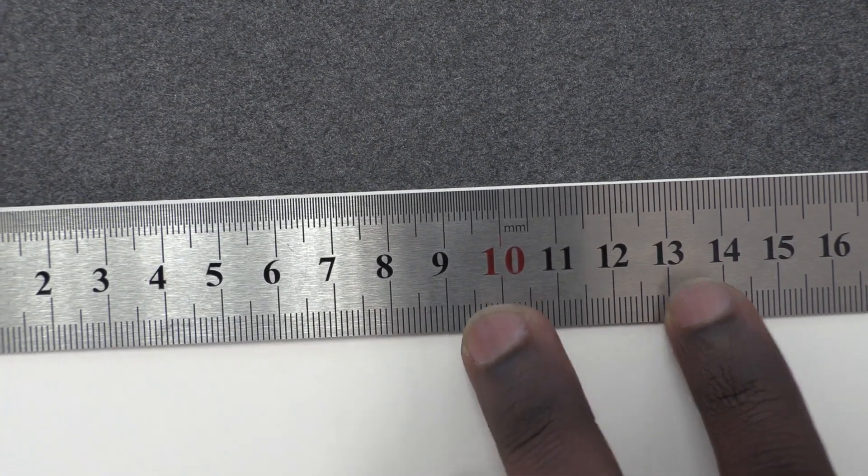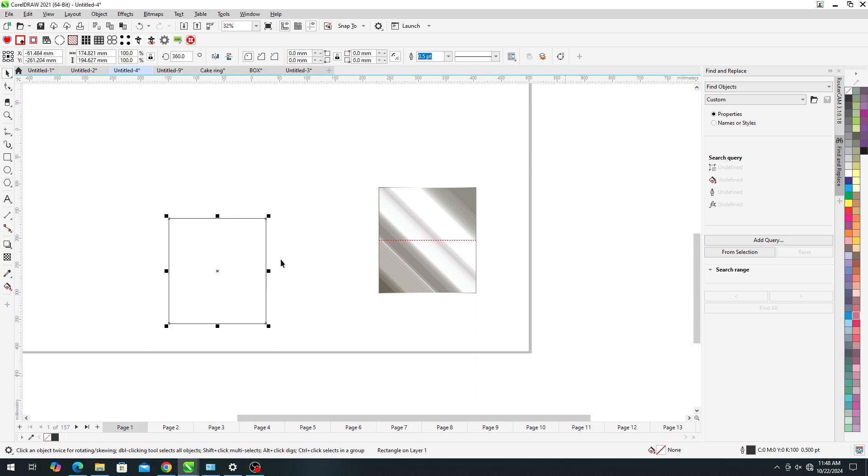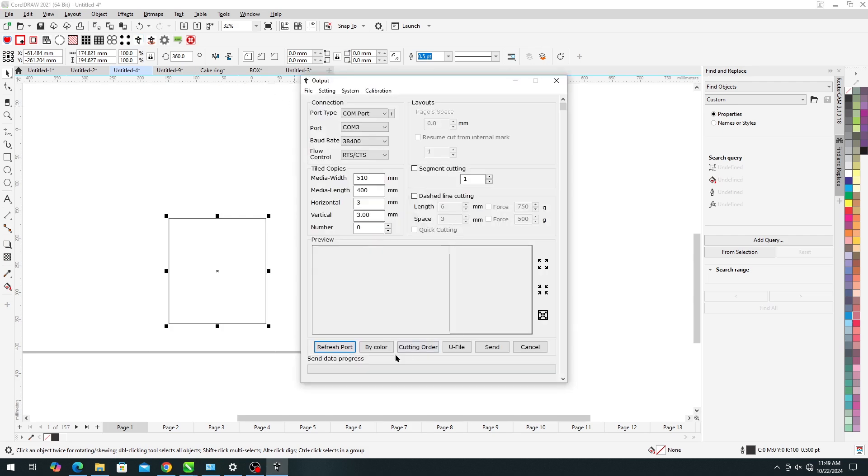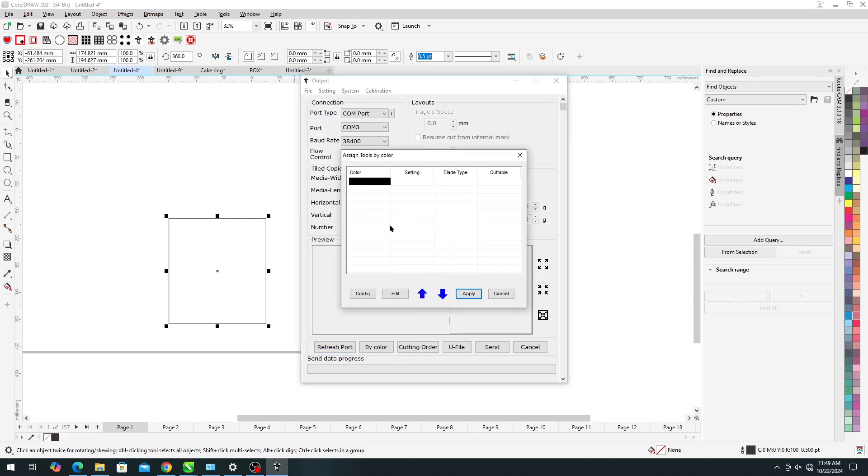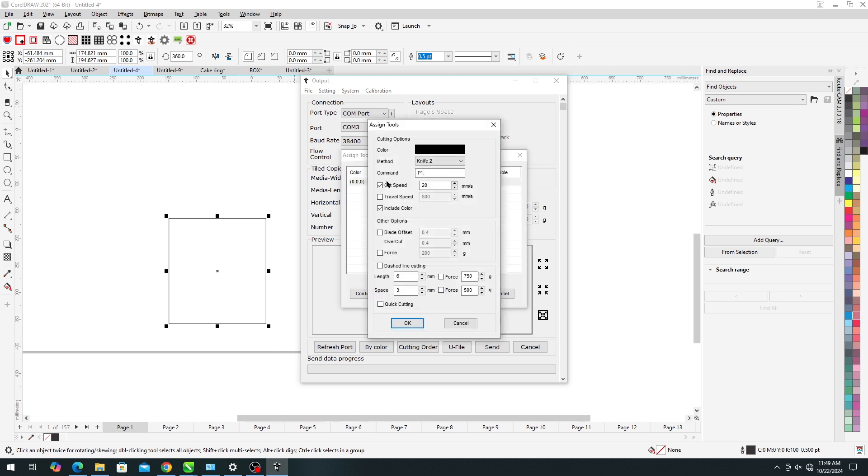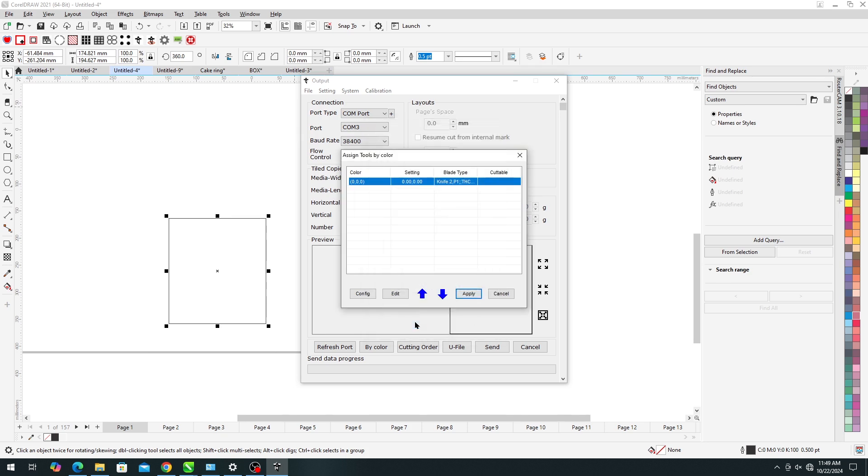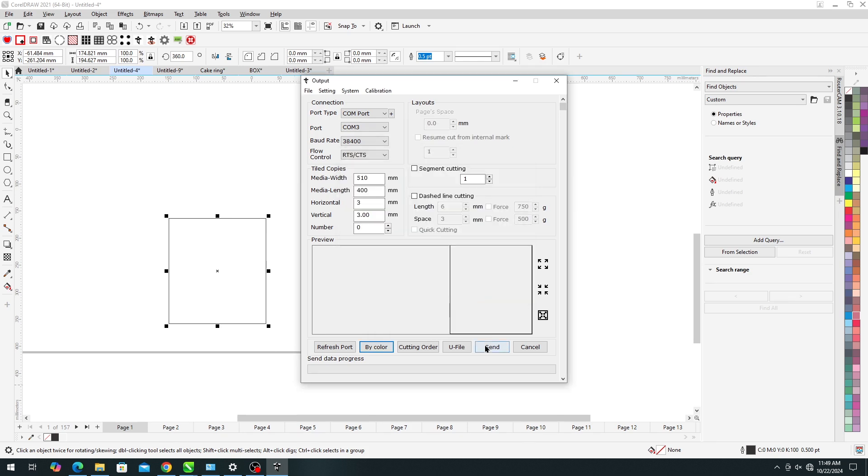We make our measurements and make a square in Coral Draw, set the blade force, and send.